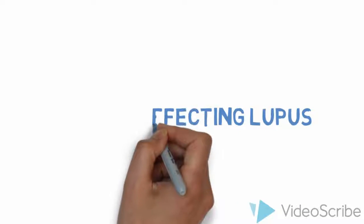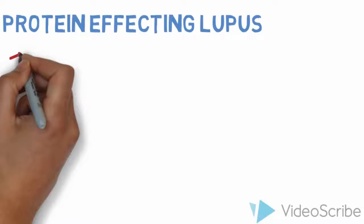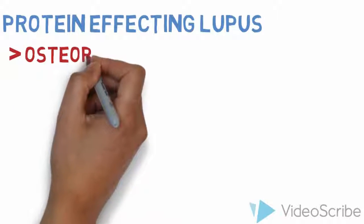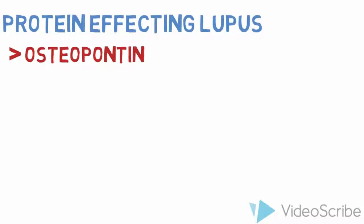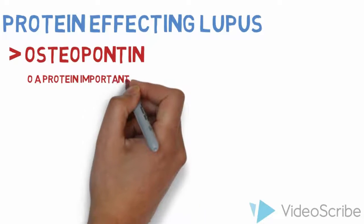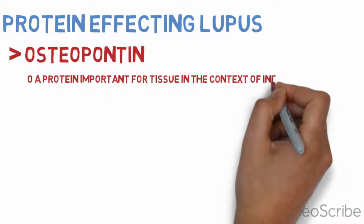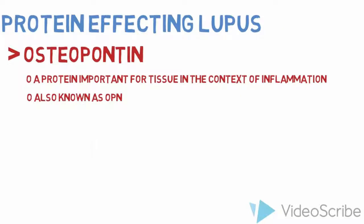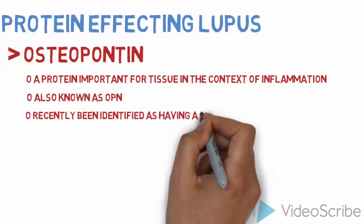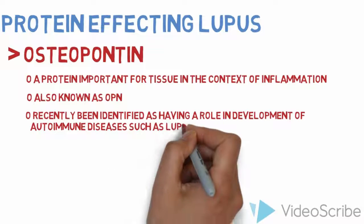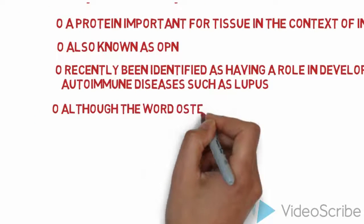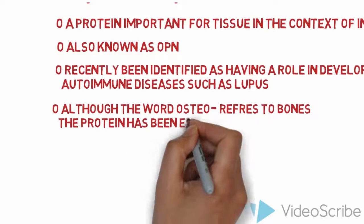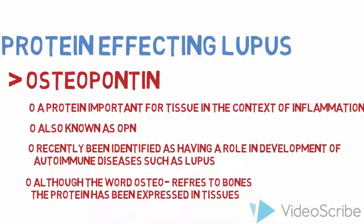Okay, protein affecting lupus. Osteopontin is a protein that is important for tissue in the context of inflammation. It's also known as OPN, and it has been recently linked and identified as having a role in the development of autoimmune diseases such as lupus. Although the word osteo stands for bones — because usually this protein is used to heal bones — it has been expressed excessively in tissues because of lupus.